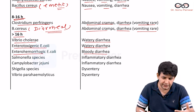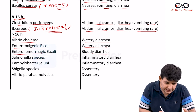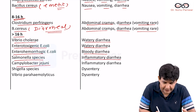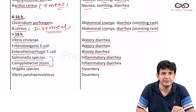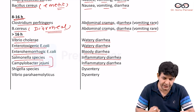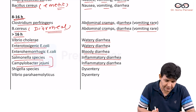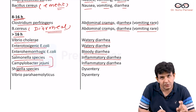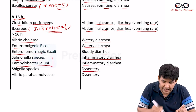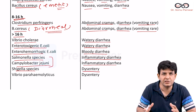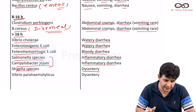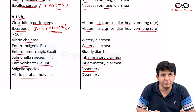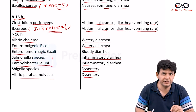Salmonella species causes inflammatory diarrhea. Campylobacter jejuni also causes inflammatory diarrhea. Inflammatory diarrhea means fecal leukocytes are present due to inflammation. Shigella also associates with inflammatory diarrhea and is a common cause of dysentery — diarrhea happens first, then dysentery episodes. Vibrio parahemolyticus, which is a halophilic vibrio, also associates with dysentery.